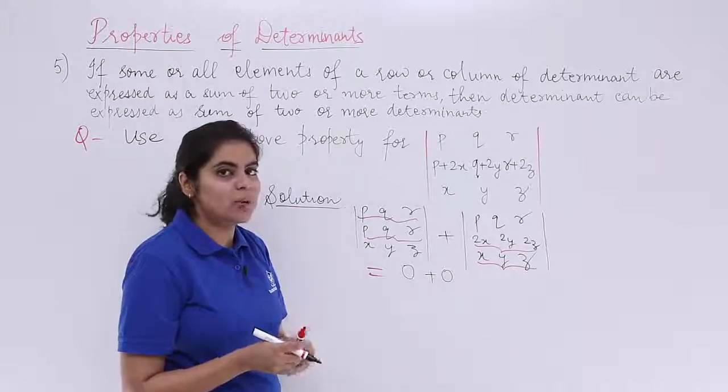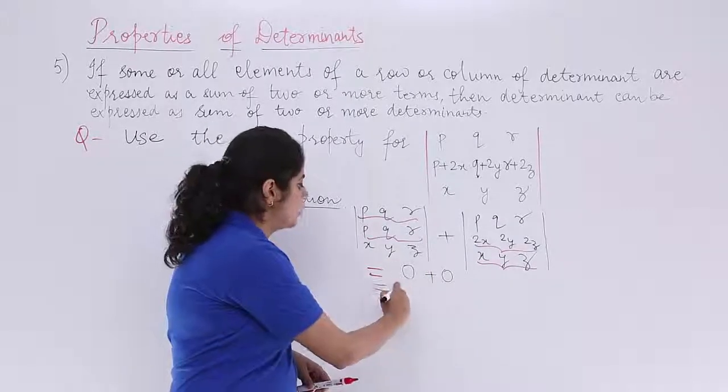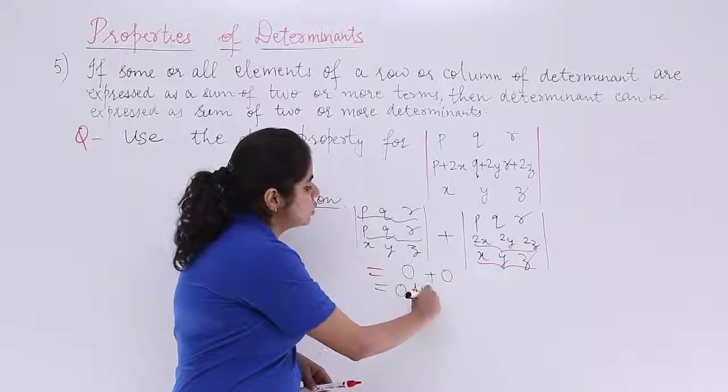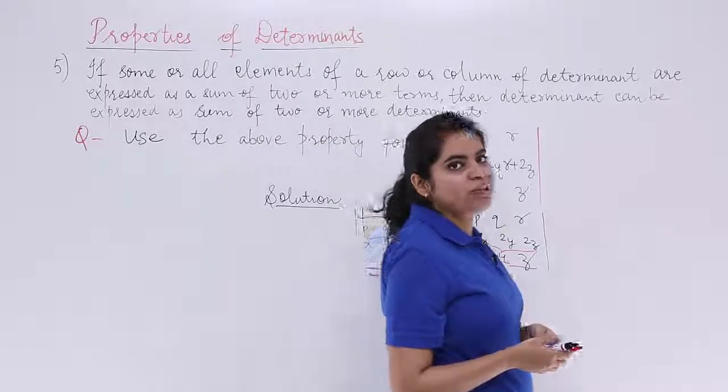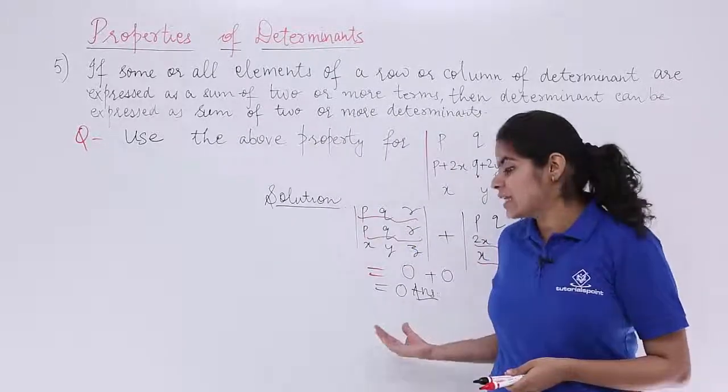Now everybody knows what is zero plus zero? It is zero. So the answer to this question of determinants based on the property number five is zero.